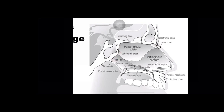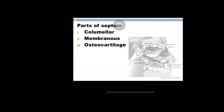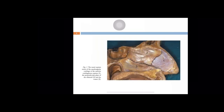This is a gist of the constituents of the nasal septum. The major constituents are the quadrangular cartilage anteroinferiorly — this is the caudal end of the septum — and the dorsal part of the septum. These are important when we deal with the surgeries of the nasal septum. This is the perpendicular plate of ethmoid, and this is the vomer.